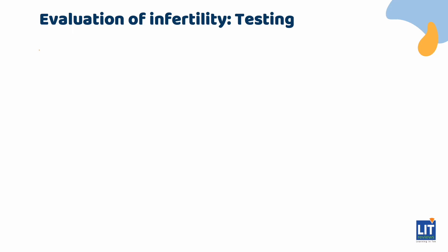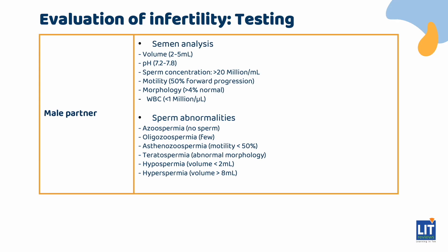For the male partner, everything starts with a semen analysis. A semen analysis determines important factors such as sperm count, sperm motility and velocity, and morphology abnormalities. Key terms include: azoospermia (no sperm), oligospermia (few sperm), asthenospermia (motility less than 50%), teratospermia (abnormal morphology), and hypospermia or hyperspermia.